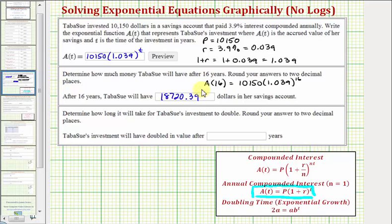And now for the last question, we're asked to determine how long it takes for Tabasou's investment to double, and again, we're asked to round to two decimal places, and we're going to be solving this graphically, not using logs. So in general, to find the doubling time of an exponential function, where A is the initial value, we want to set the function value to 2A.